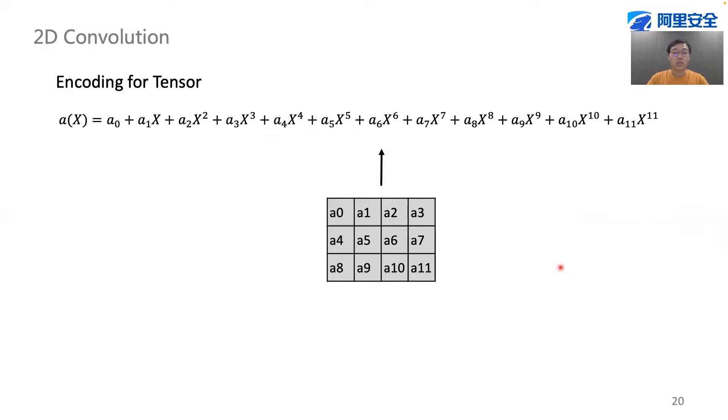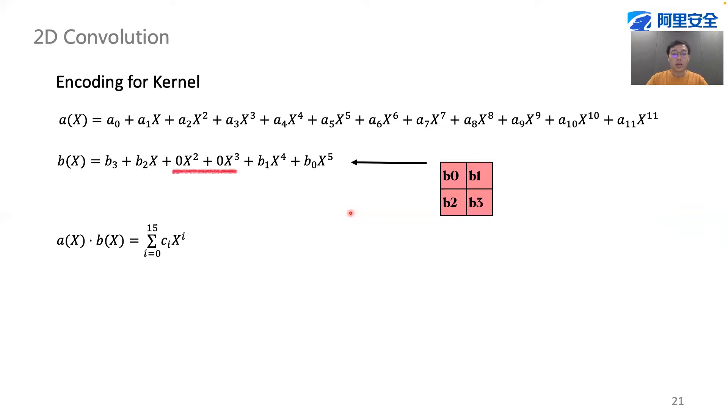In Cheetah, how to encode this matrix is a crucial point. For matrix A, the encoding is relatively easy. We will just lay out elements in this matrix and put them into the polynomial coefficients, row after row.